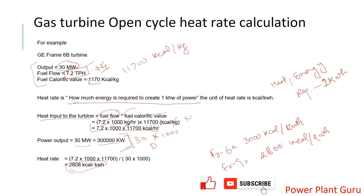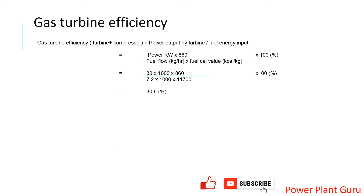Another KPI is efficiency. Efficiency and heat rate are essentially the same thing but calculated in opposite formats. If you calculate output divided by input, multiplied by 100, that gives you efficiency. This covers the entire gas turbine side — the gas turbine plus compressor together. I will also create a separate video on compressor efficiency calculation, as many people find that difficult.